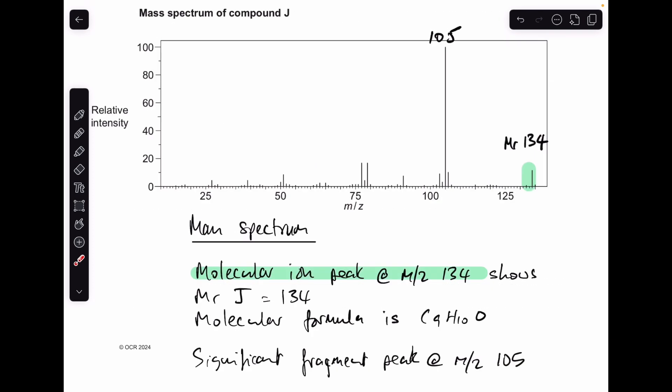Moving on to the mass spectrum. We've got the molecular ion peak here at 134, so that's telling us the MR of J. We've also got a significant fragment peak here at 105 — we'll leave that until we've got the structure sorted. So we can say the molecular formula must be the same as the empirical formula, C9H10O, because of that MR.